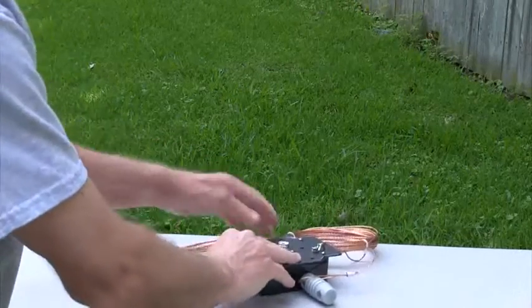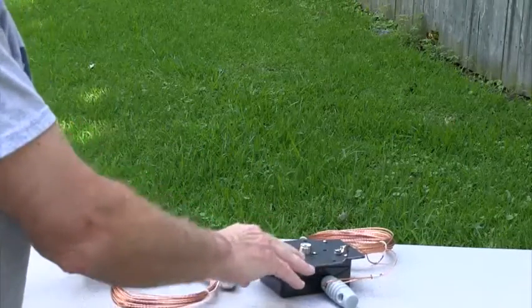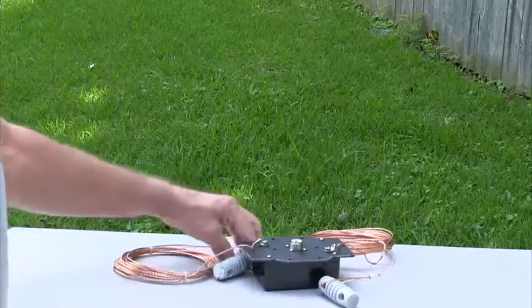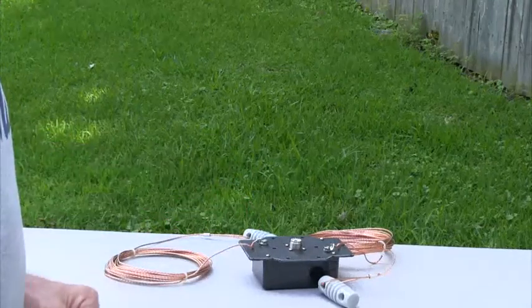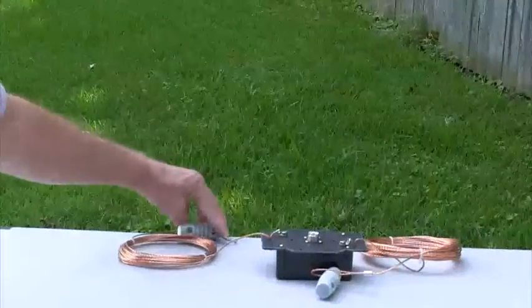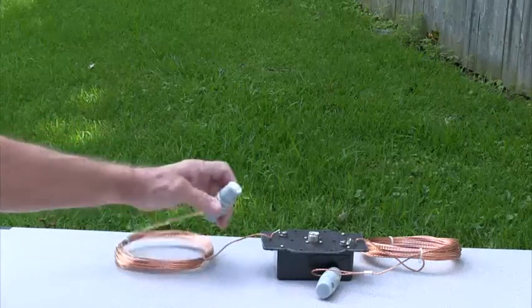The powerlite antennas handle maximum legal limit 1,500 watts PEP, CW, and single sideband on 75 and 40 meters or 40, 20, 10, and 6 meters. Their 14-gauge stranded copper wire and porcelain end insulators are pool-tested to 200 pounds.